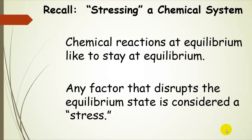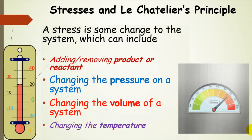Let's remind ourselves about stressing a chemical system. Chemical reactions that are at equilibrium already like to stay at equilibrium, so if we do anything to disrupt that equilibrium state, it's considered a stress. Last time we talked about some of the different kinds of stresses — in the previous presentation, we talked about what happened and which way the equilibrium shifted when we added or removed product or reactant. Now we're going to talk about gaseous systems where we change the pressure or the volume of the system.